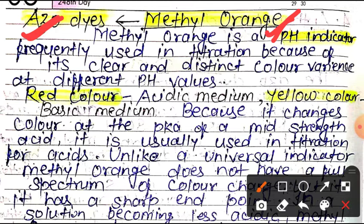Methyl Orange is a pH indicator frequently used in titration because of its clear and distinct color variance at different pH values. Methyl Orange is a pH indicator.